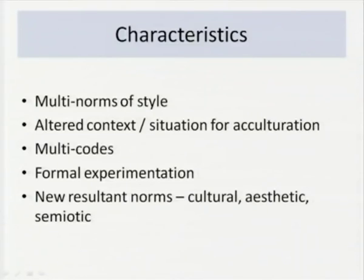There are multiple norms of style, altered contexts and situations for acculturation, multiple codes in which English is written, and formal stylistic experimentation in the writing and even reading of English — as a result of which we have new norms: cultural, aesthetic, and semiotic or symbolic norms that we need to celebrate and address in any course on English language and literature today.